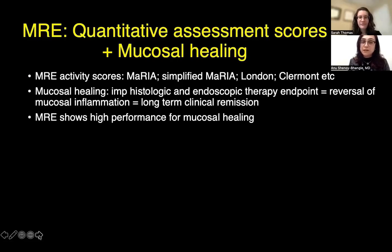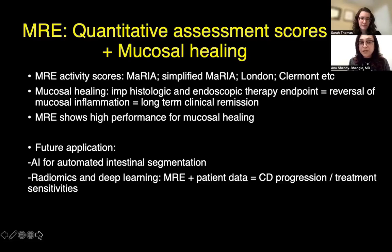Of these, the MARIA score, which stands for Magnetic Resonance Index of Activity, is the best validated. Mucosal healing is an important endpoint for therapeutic response, and reversal of mucosal inflammation, which predicts long-term clinical remission, is an important histologic and endoscopic therapeutic endpoint. MR enterography shows high performance for assessment of mucosal healing. In terms of future applications, AI can be used for automated intestinal segmentation, while radiomics and deep learning can be applied to MR enterography as well as patient data combination in order to predict Crohn disease progression or treatment sensitivities.